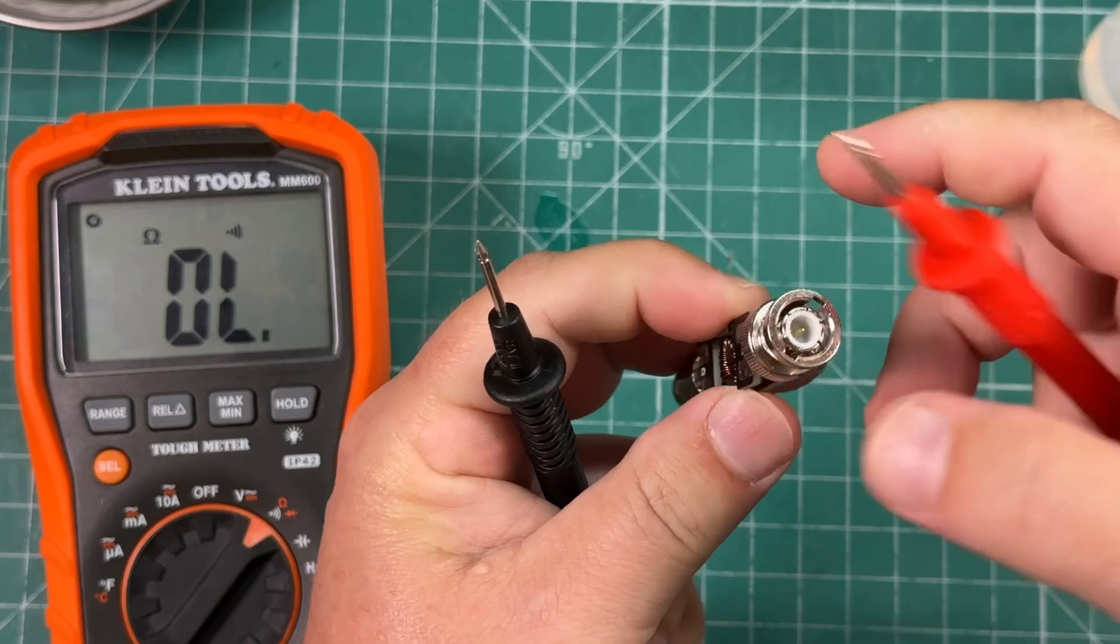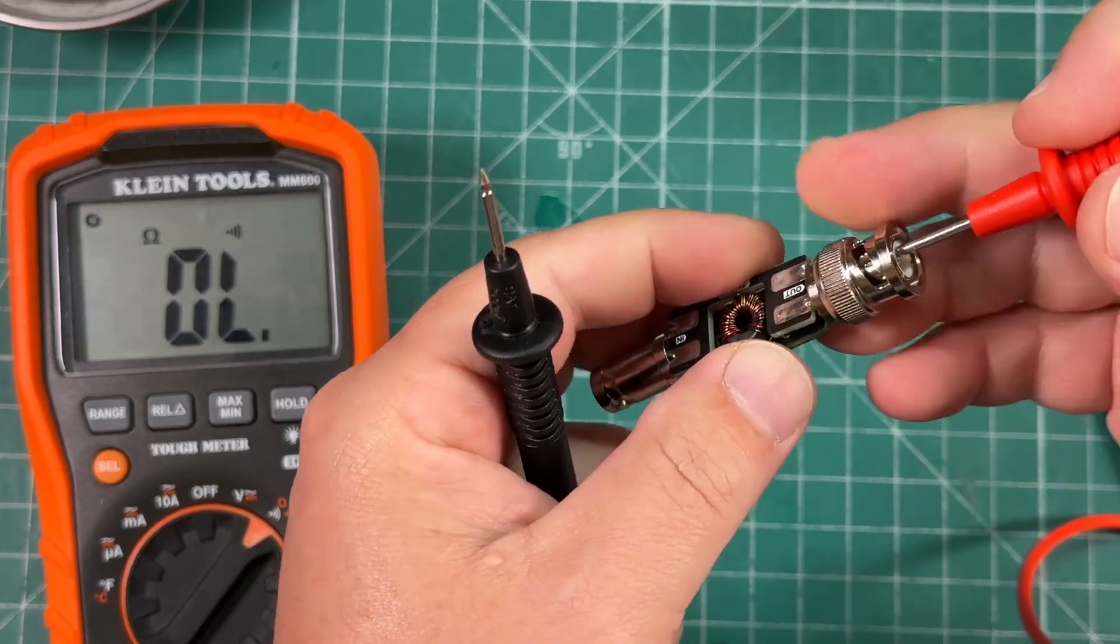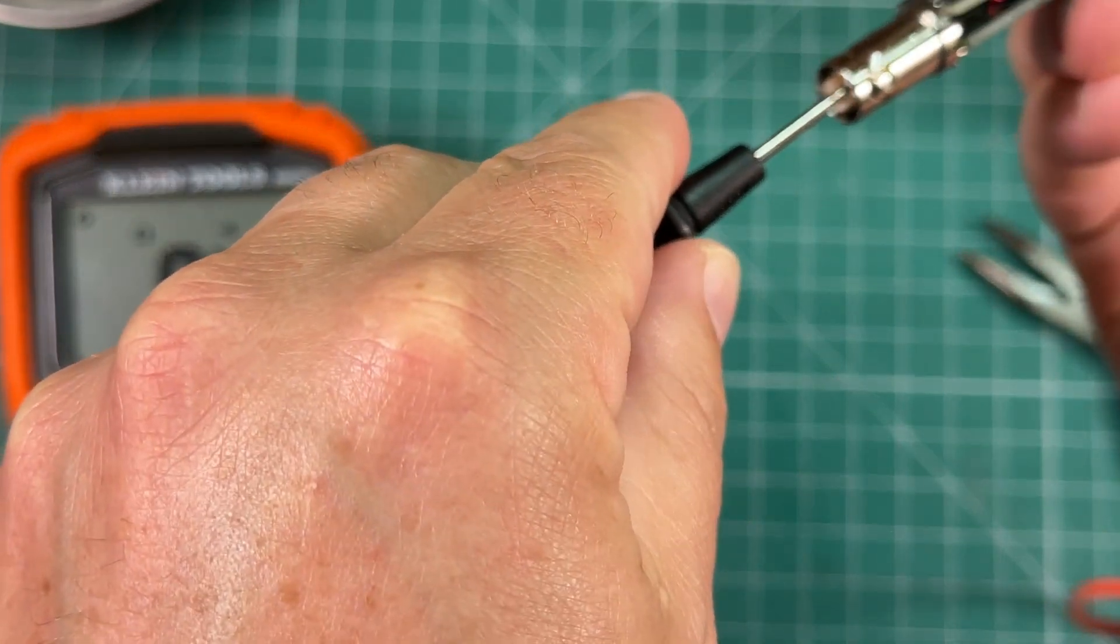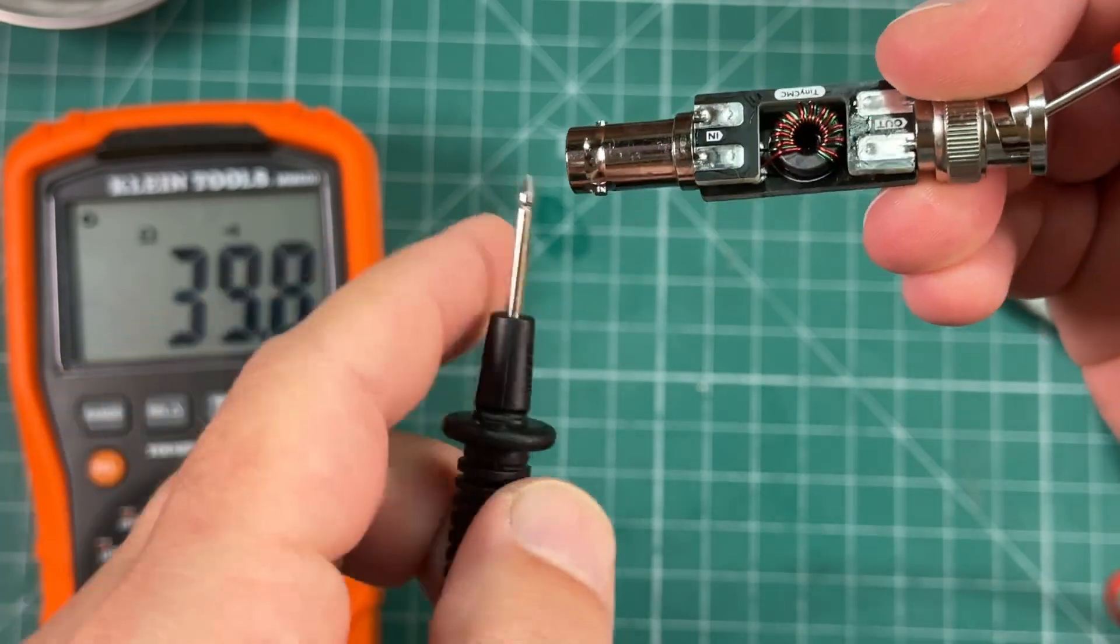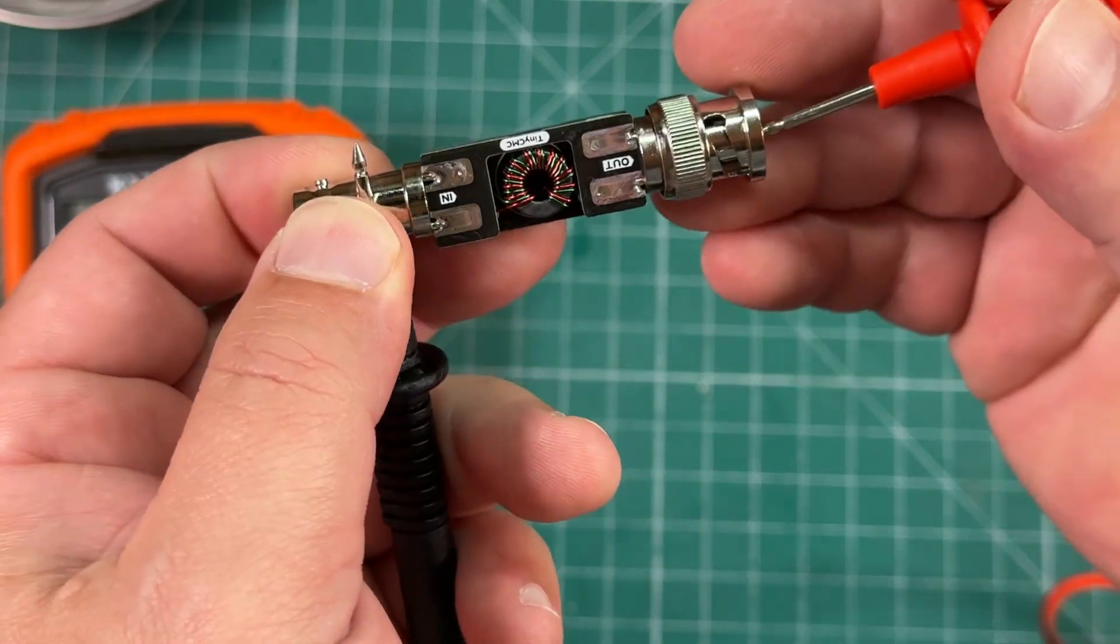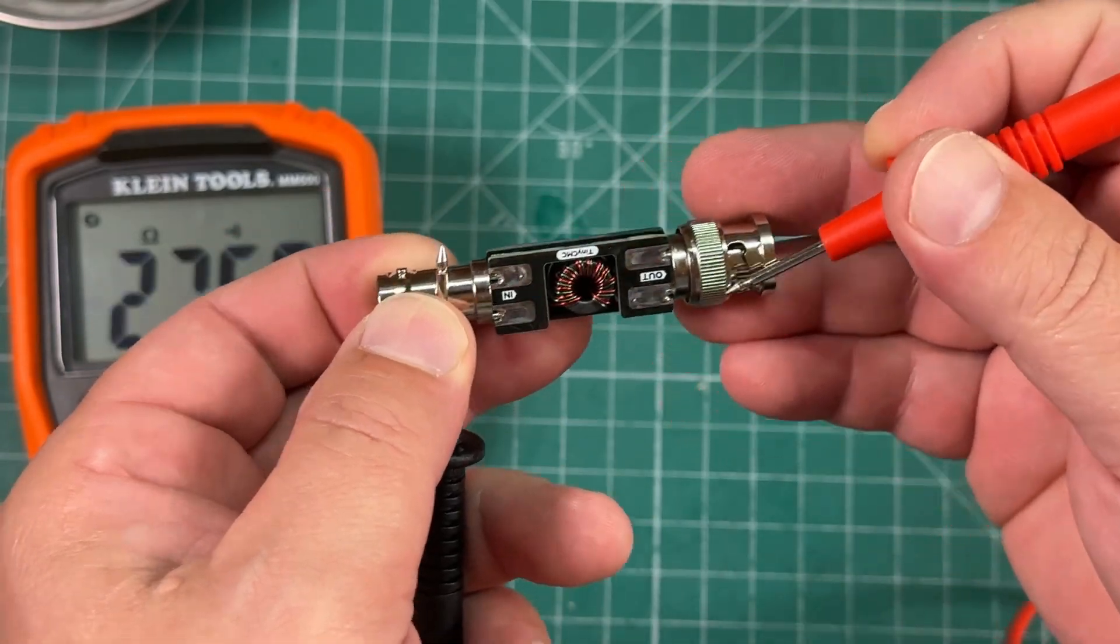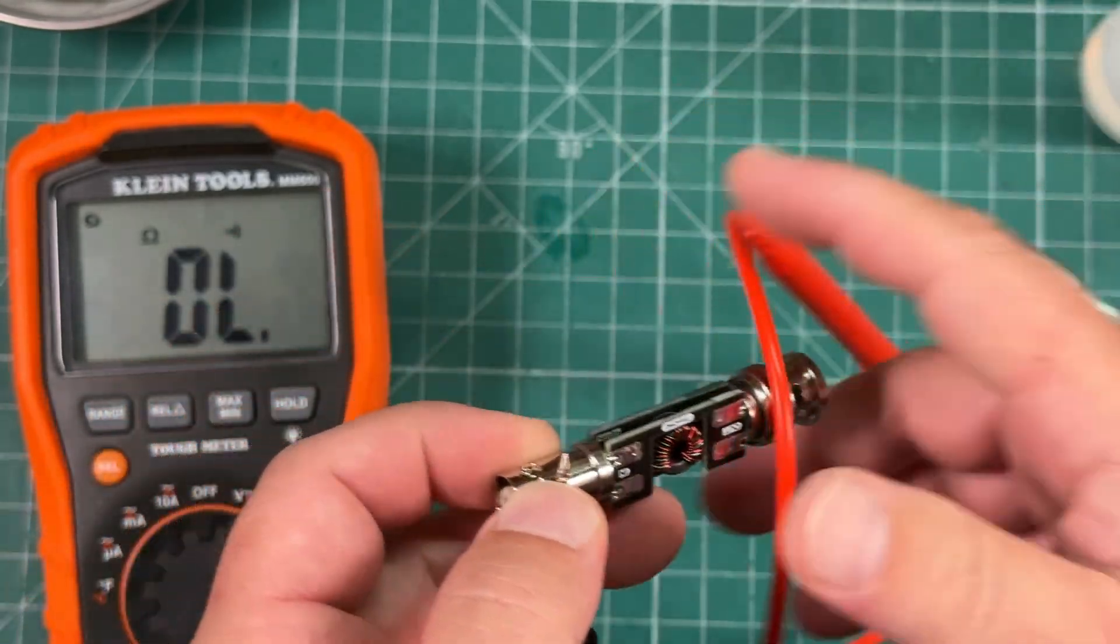I just want to check continuity between the center conductors. Make sure we didn't screw anything up. Hey, that's a good sign. And it is not shorted to ground. But that has continuity too. So we did it right.